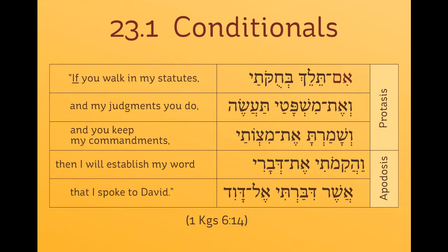Any conditional sentence has two parts. You have the if part, the condition — the fancy word is protasis — and then you have the then part, the consequence — the fancy word is apodosis. For example, if I drink coffee, then as a consequence, I will have more energy. So: if I drink coffee, then I'll have more energy.